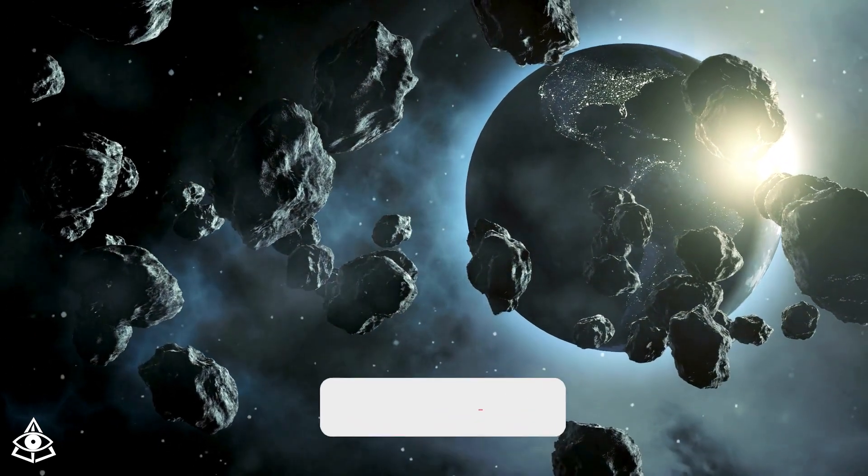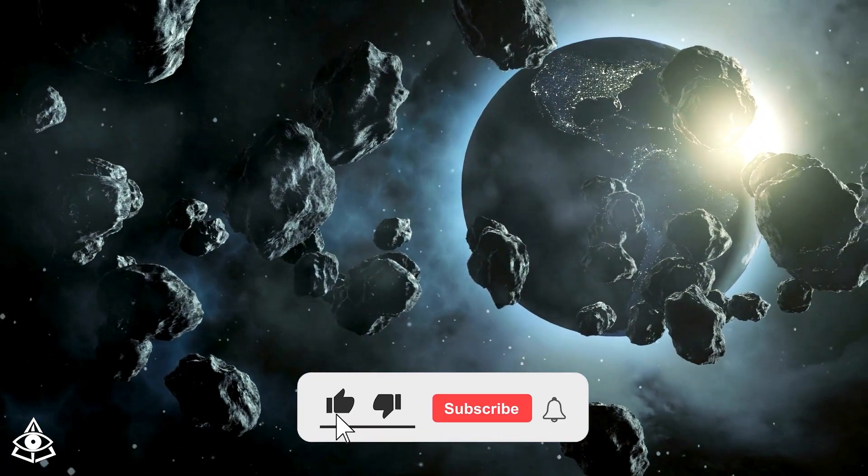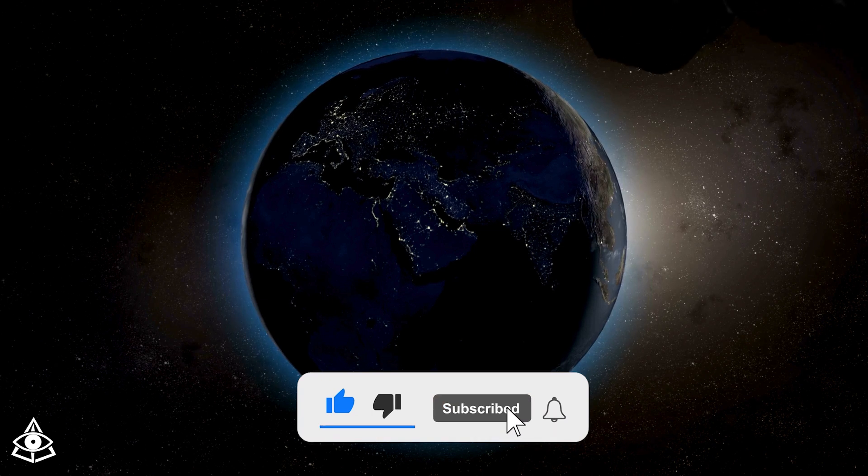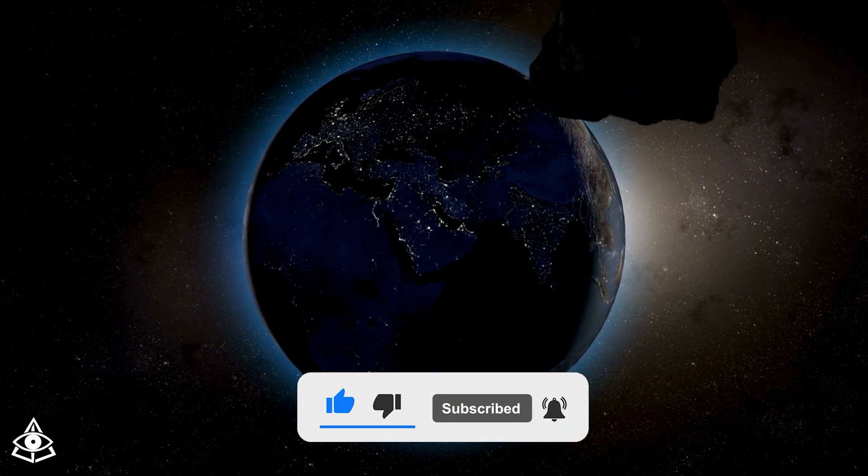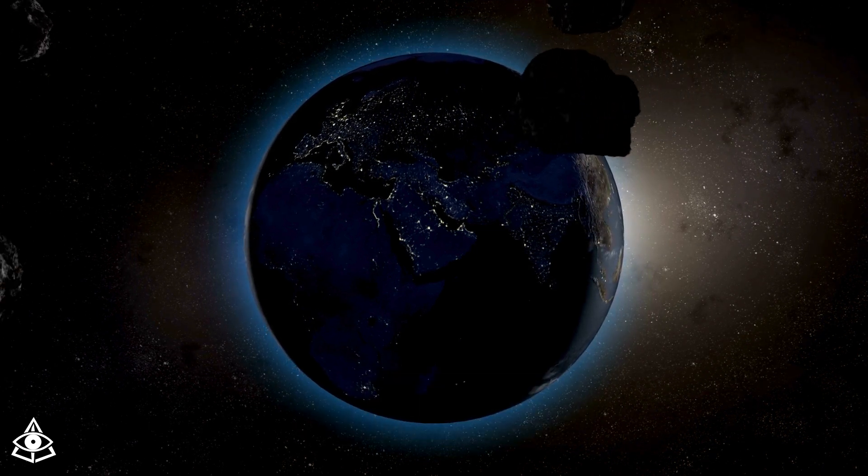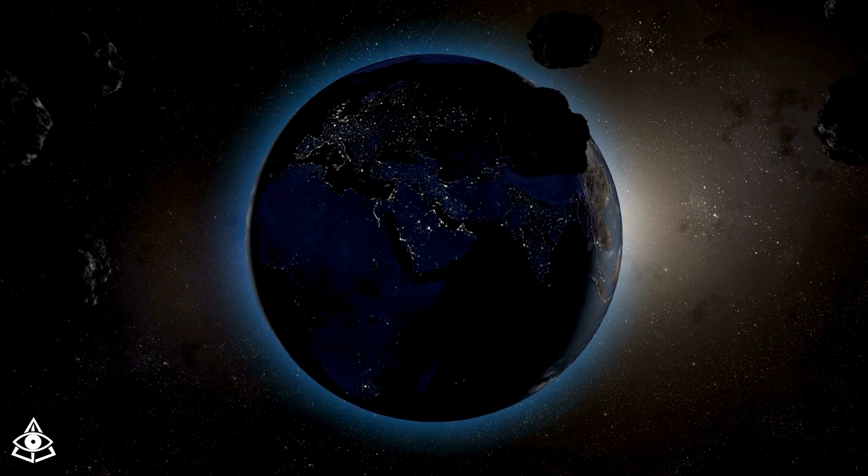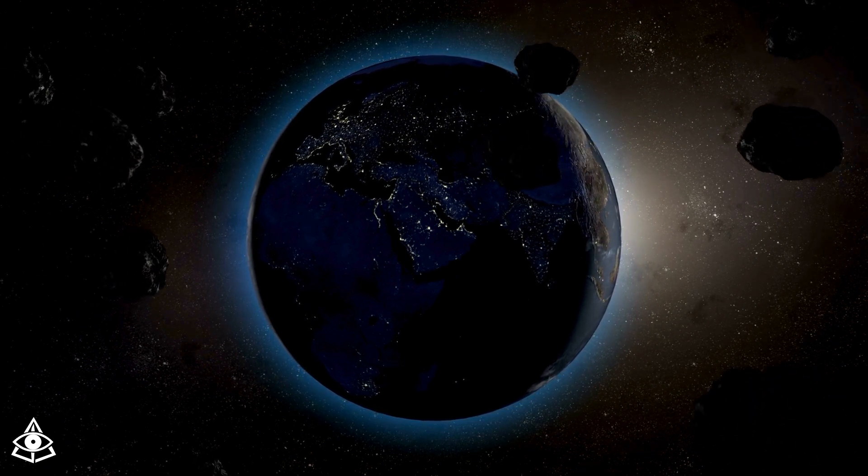A team of astronomers has detected a small space rock of about 10 meters wide this August 7th, which was called 2024 P-5. But the surprising thing is that this rock is going to rotate around our planet and become a mini-moon.